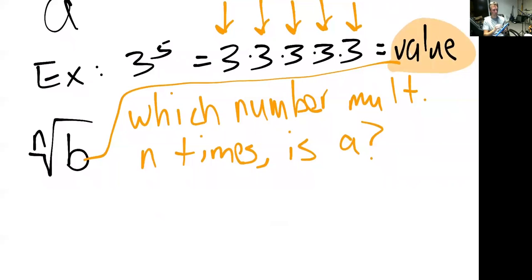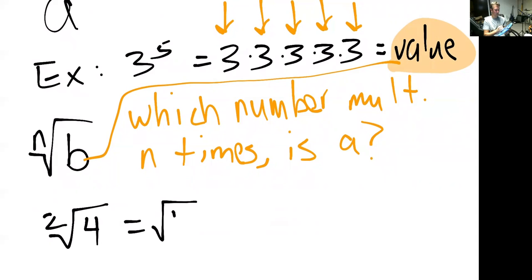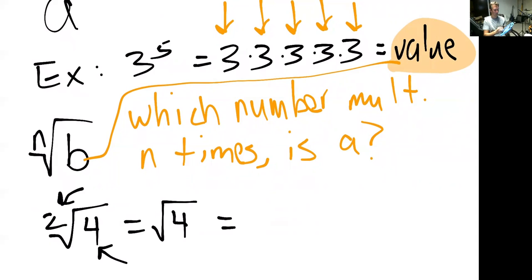A quick example — something you're perhaps familiar with — is the second root. We call this the square root. It's often written like this: the square root of four. And that's just asking what number multiplied together two times gives us four. We all know that one — it's two.